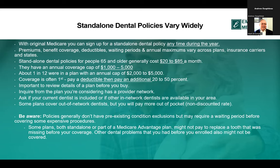Be aware that policies generally don't have preexisting conditions exclusions, but they may require a waiting period before some expensive procedures are covered. Even if you're paying $70 a month for a standalone plan and immediately need a crown, they have a big risk — and then you could cancel after. So there are often waiting periods. Some plans won't replace a tooth that was missing before you started your coverage, and there are dental problems you may have had prior to enrollment that may not be covered. You have to look at the evidence of coverage to know what will be covered.